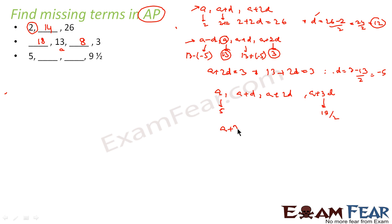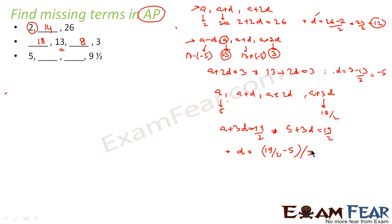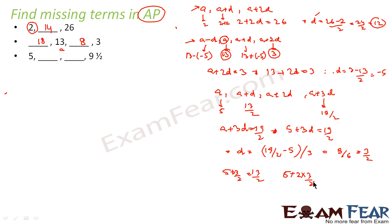So 5 plus 3D equals 19 by 2, which gives D equals (19 by 2 minus 5) divided by 3. That comes out to be 9 by 6, or 3 by 2. So D equals 3 by 2. The second term A plus D is 5 plus 3 by 2, which is 13 by 2. The third term A plus 2D is 5 plus 2 into 3 by 2, the 2s cancel, giving 8. So the sequence is 5, 13 by 2, 8, and 9 and a half.